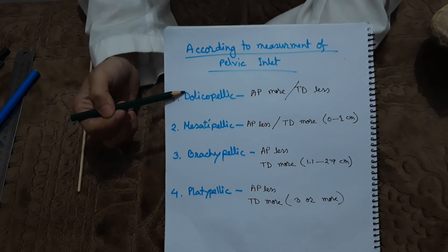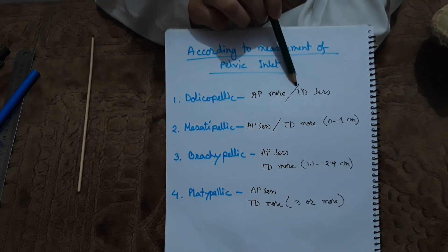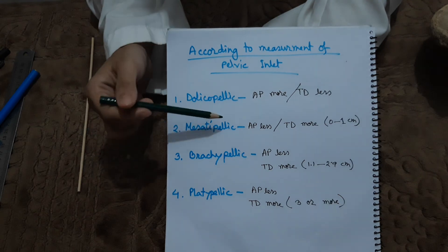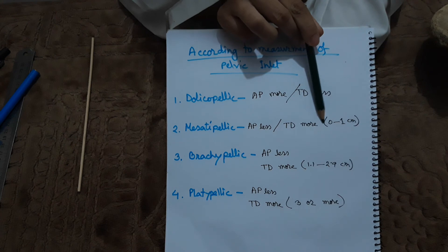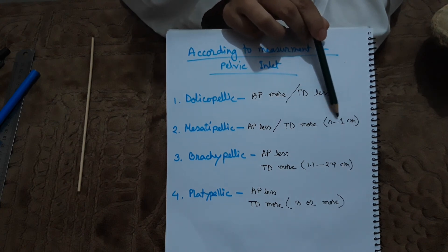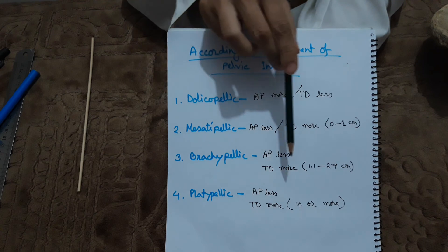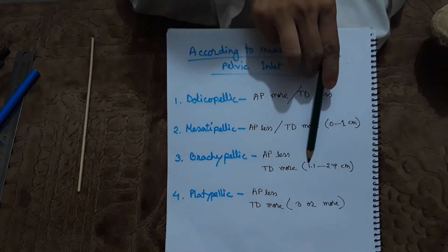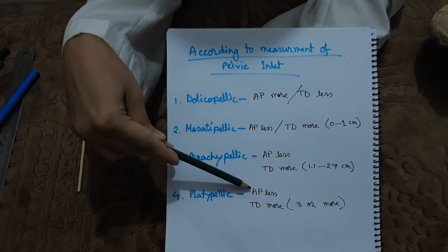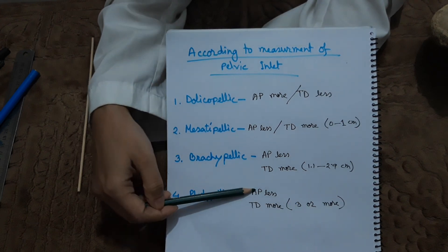There are four classifications of the pelvic inlet based on diameter ratios. The mesatipellic type is where the anteroposterior diameter equals the transverse diameter within 1 cm. The brachypellic type is where the transverse diameter exceeds the anteroposterior diameter by 1.1 cm to 2.9 cm. The platypellic type is where the transverse diameter exceeds the anteroposterior diameter by 3 cm or more.